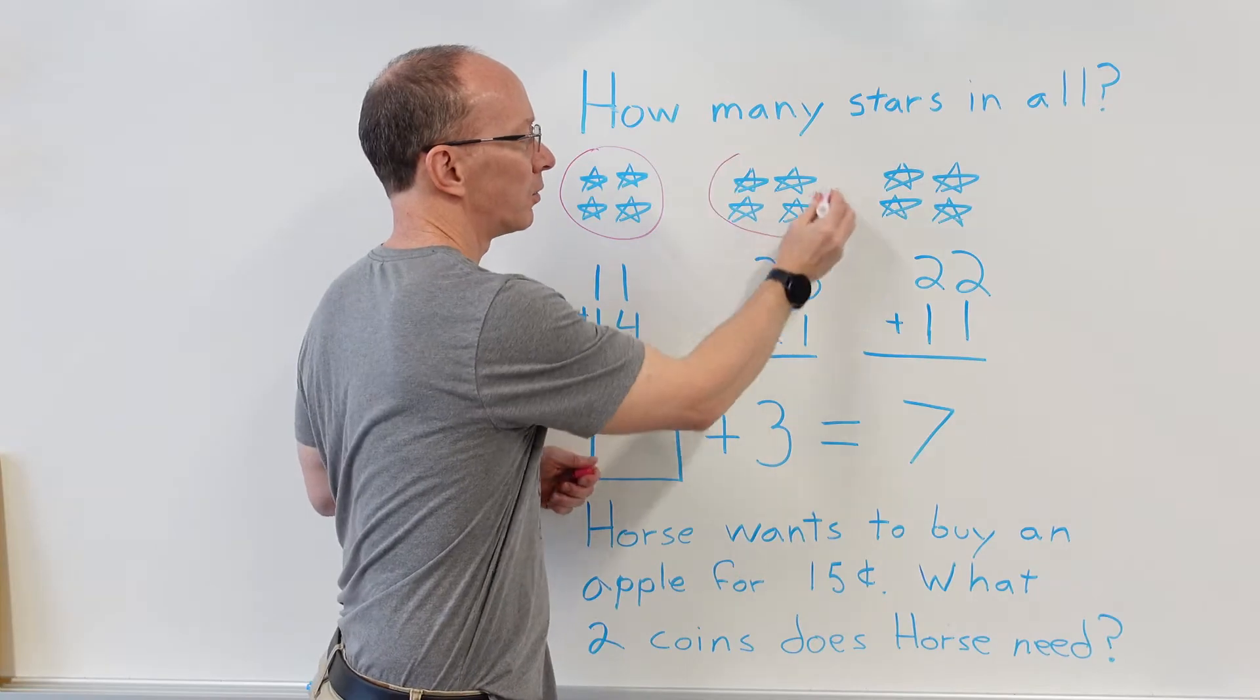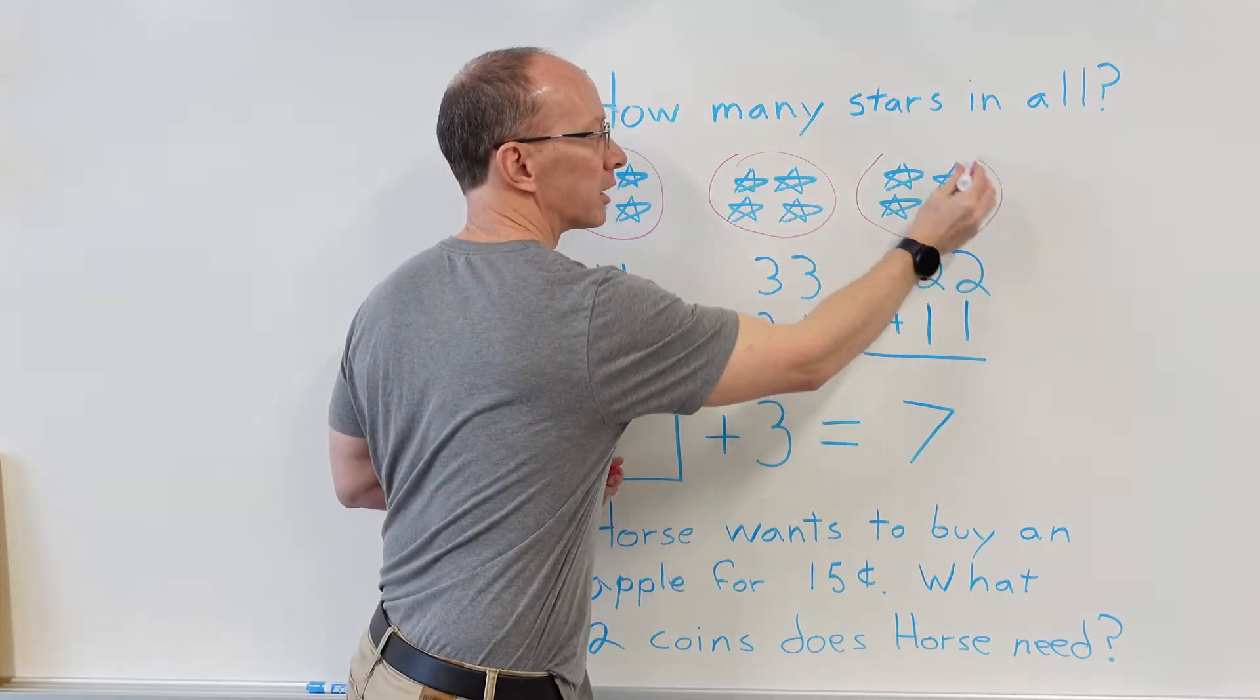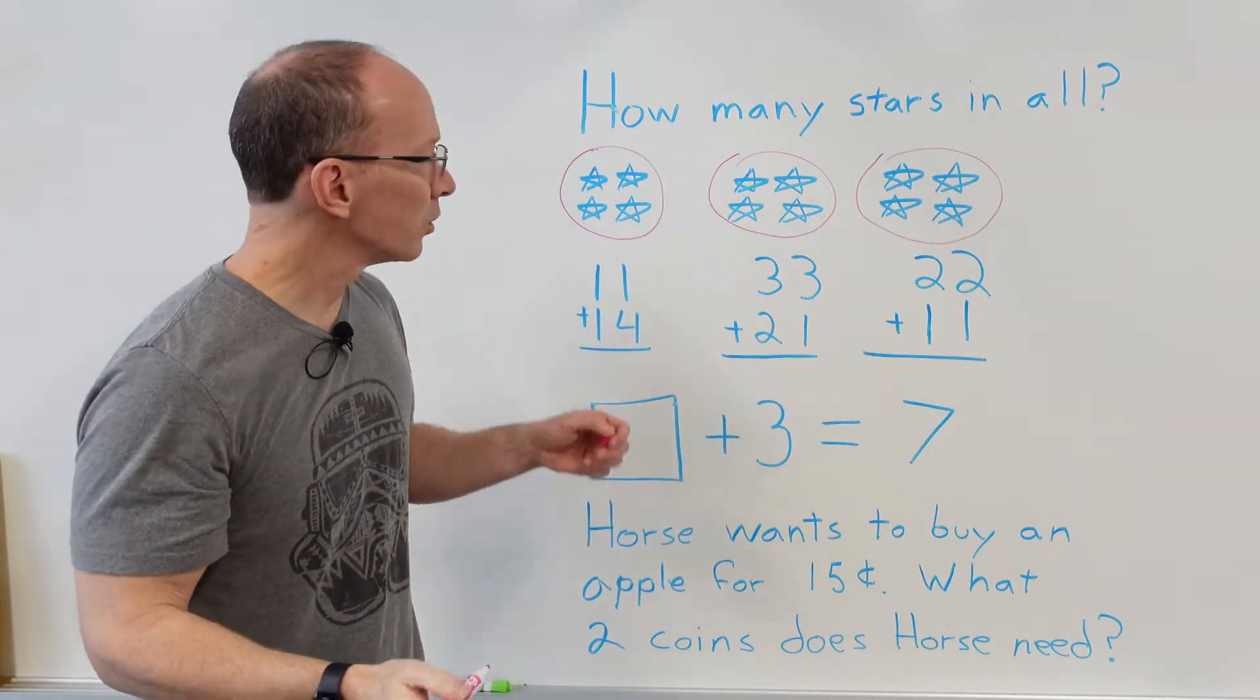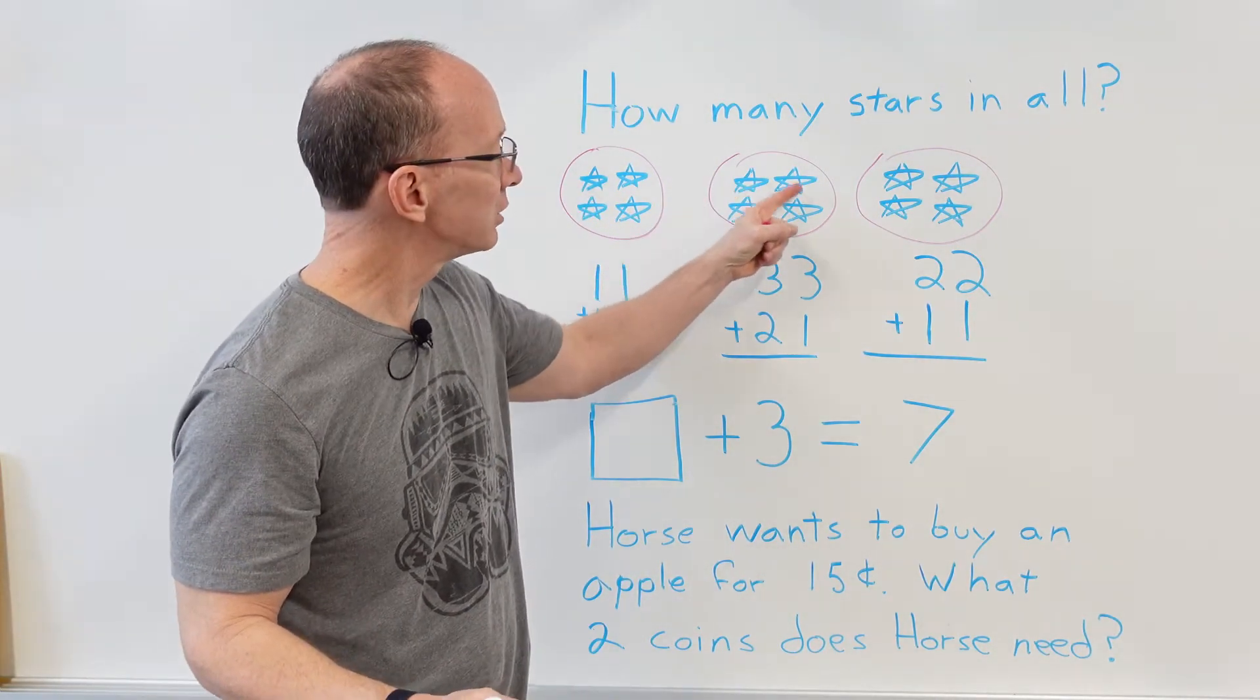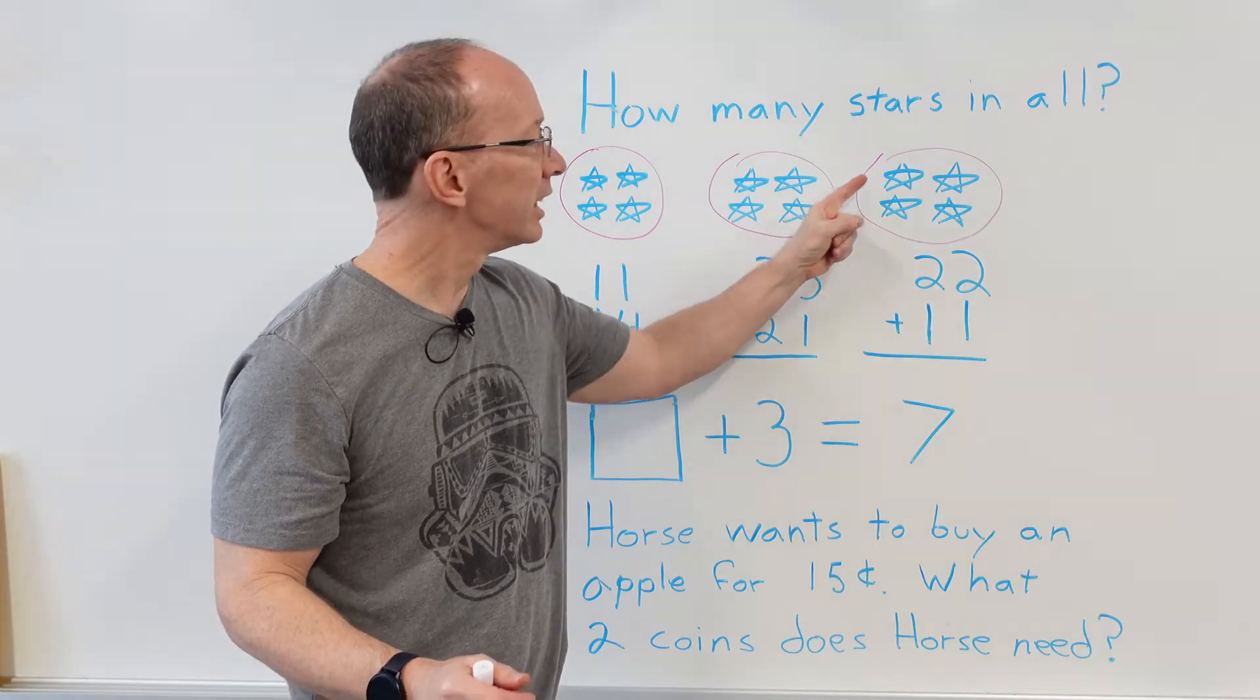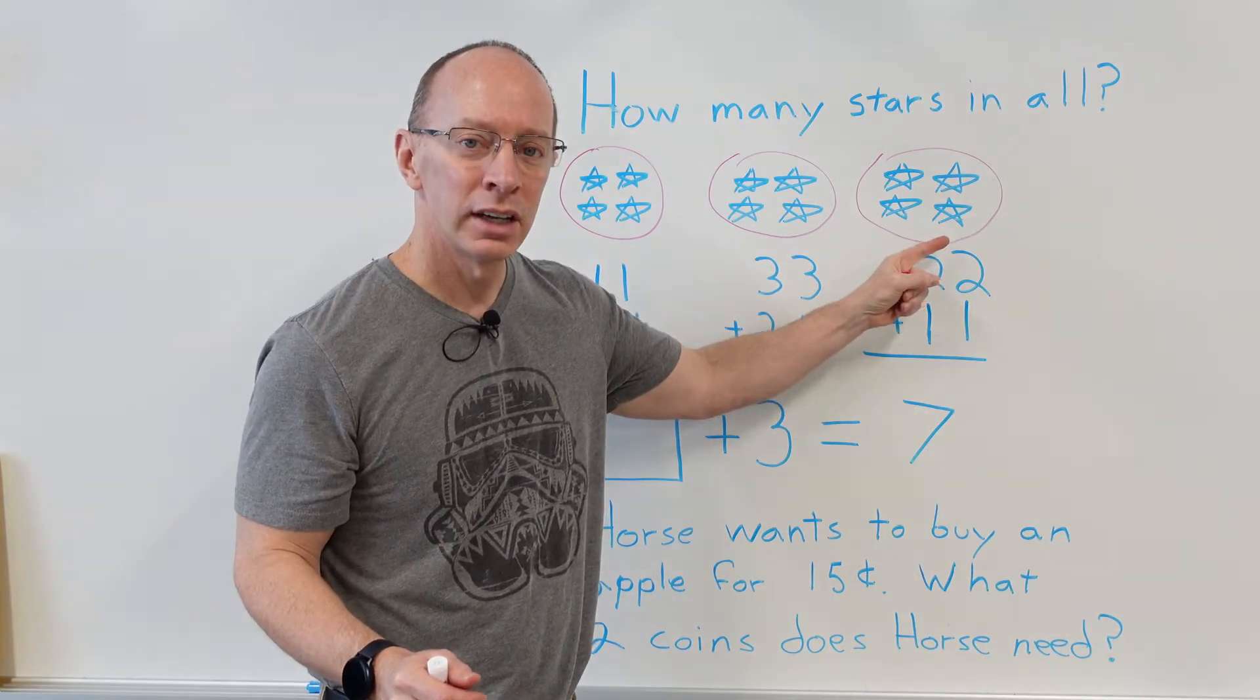Here's a group of four, there's a group of four, and there's a group of four. So I could count it out. I could go one, two, three, four, five, six, seven, eight, nine, ten, eleven, twelve. So there are twelve stars right here. So the answer would be twelve stars.